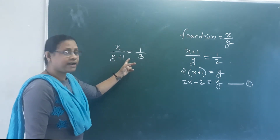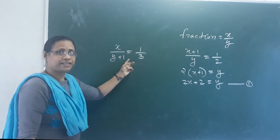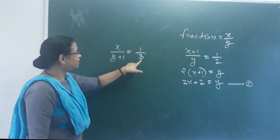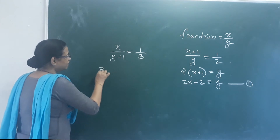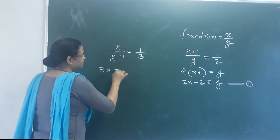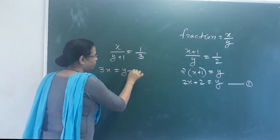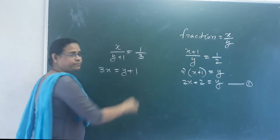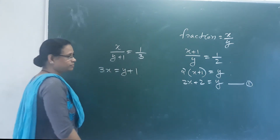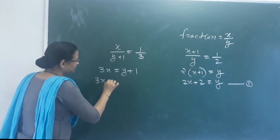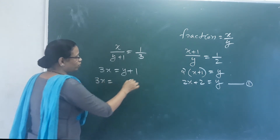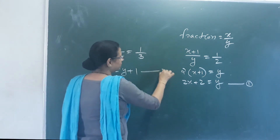This is the denominator — we add 1 to the denominator. Cross-multiplying: 3X is equal to Y plus 1. That is Equation 2.